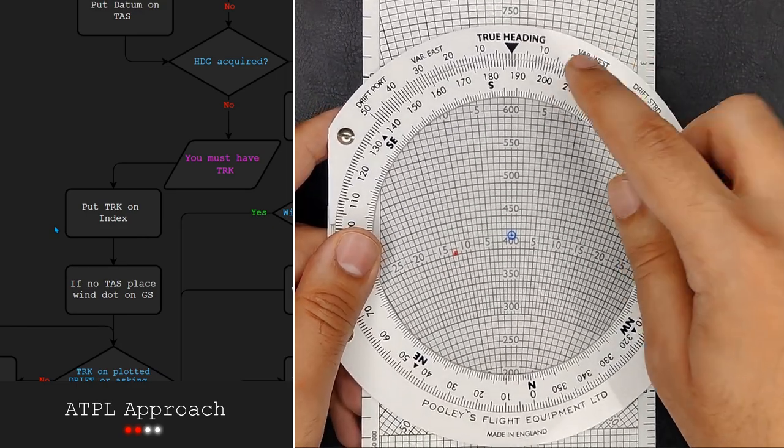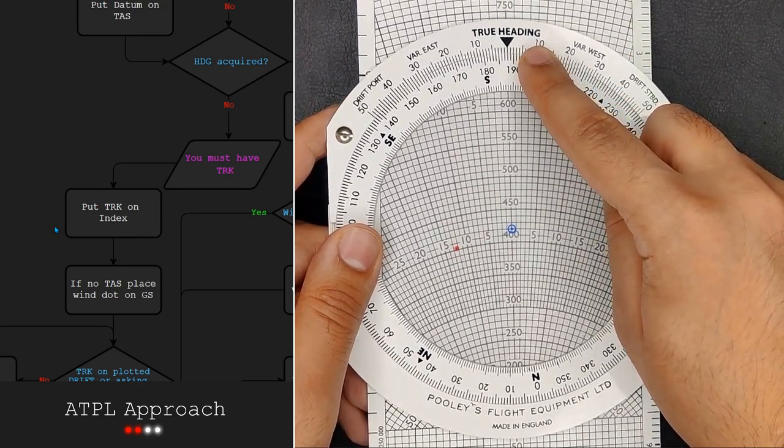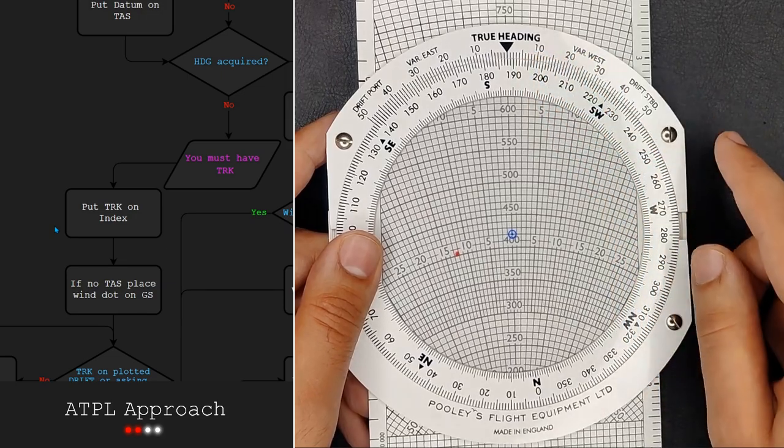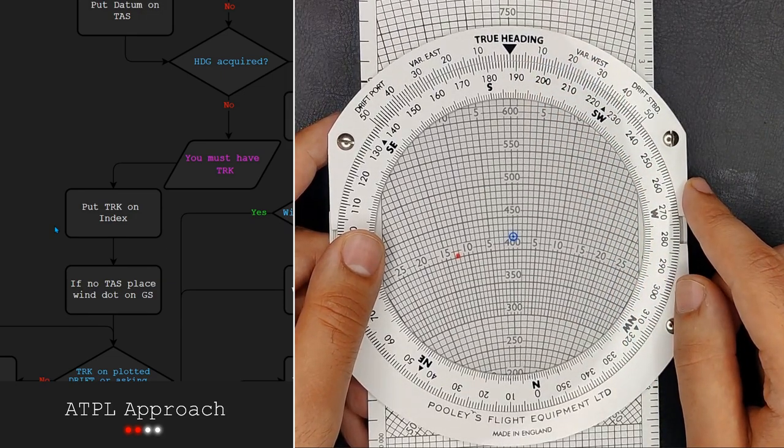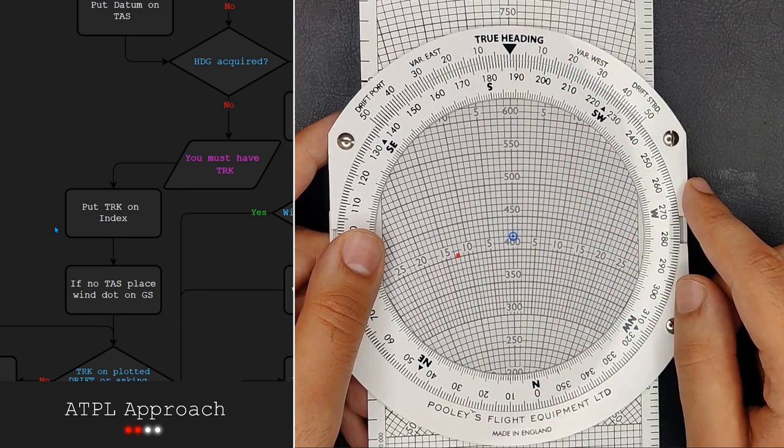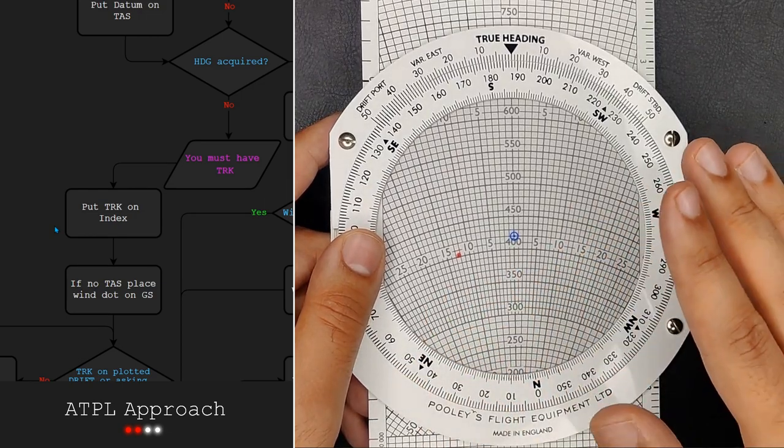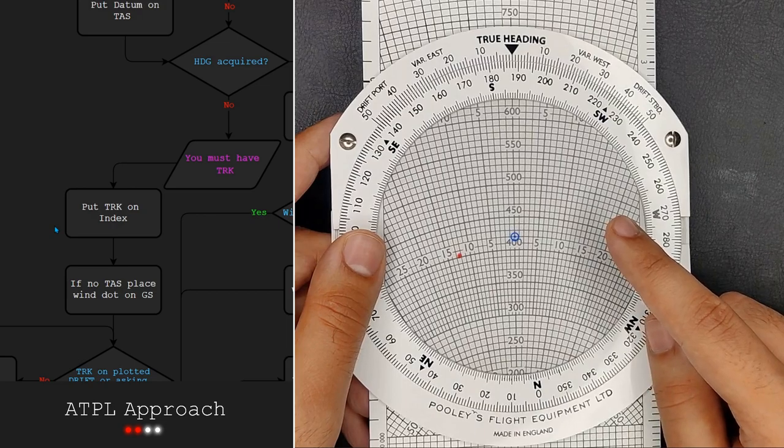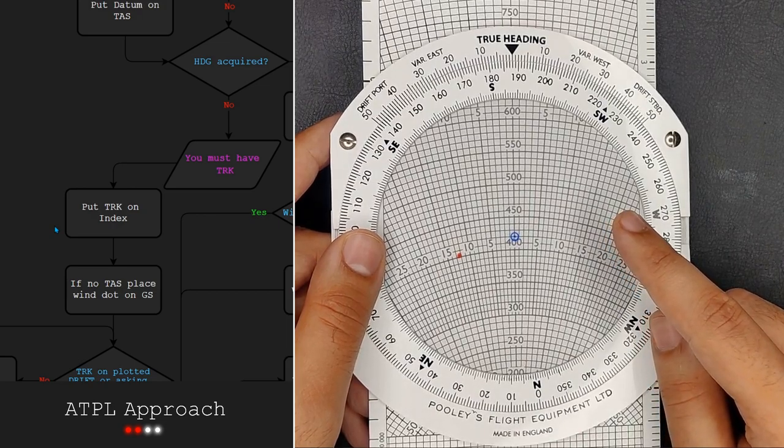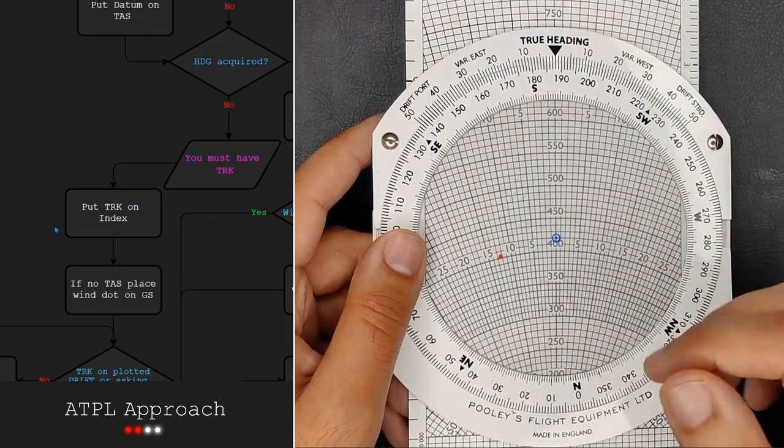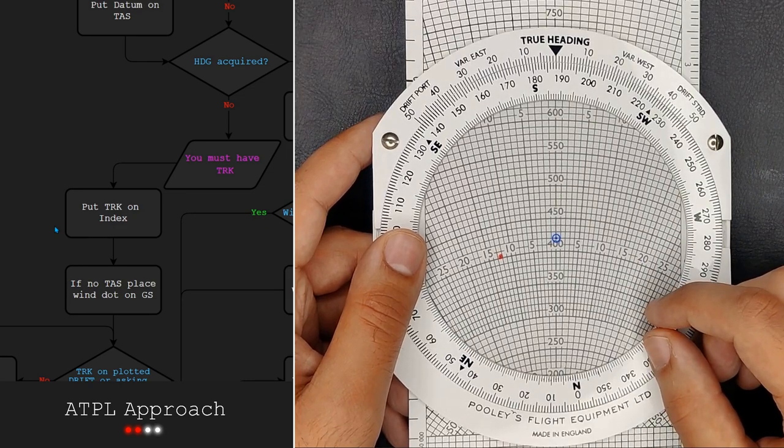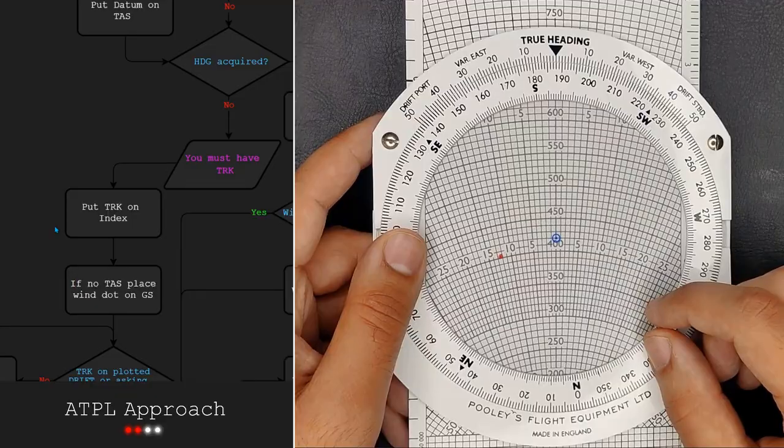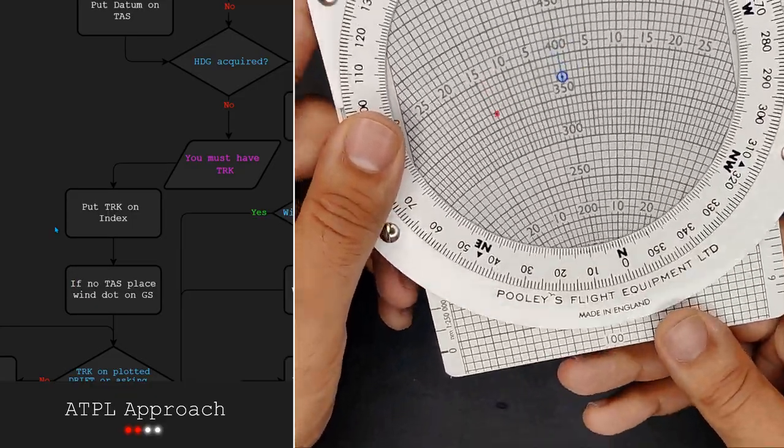There we go. It says heading on my pulley here and does not say track. Because of this, the flight computer is now incorrectly set up. Whenever you put the track on the index, I want you to feel a bit sick inside and remember that that is incorrect. But we still do it because we have to guess where our heading is and the track is a pretty good guess because it has to be within 50 degrees of it.